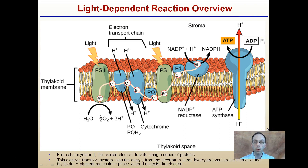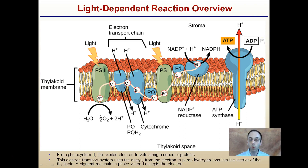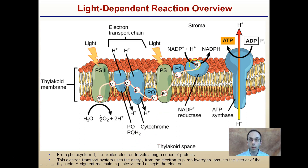Let's look at an exploded view overview of the light-dependent reaction. For Photosystem II, an excited electron travels along a series of proteins. This electron transport system uses energy from the electron to pump hydrogen ions across the membrane to the inner thylakoid — that's our thylakoid space. A pigment molecule in Photosystem I accepts an electron, and we're using ATP synthase to generate ADP into ATP. We're going to follow this electron along. Remember, this is a chain because it only occurs in one direction.